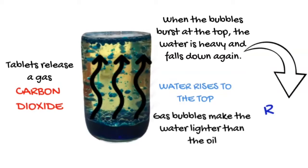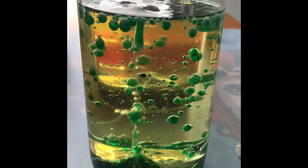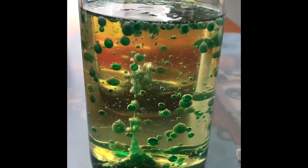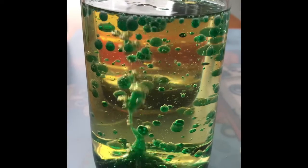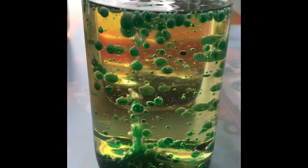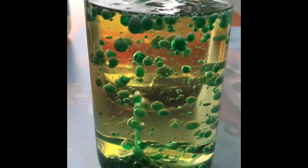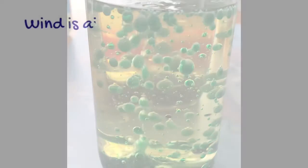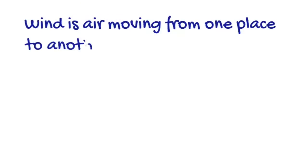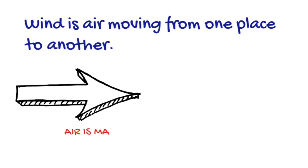Now let's watch a video of our lava lamp again, knowing what we know about how it represents rain. Lava lamps can also represent wind. Wind is air moving from one place to another.